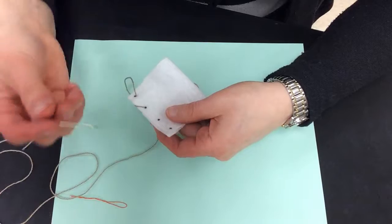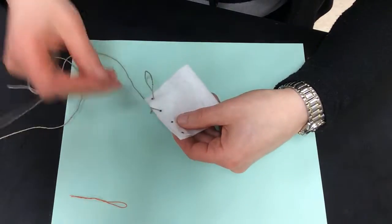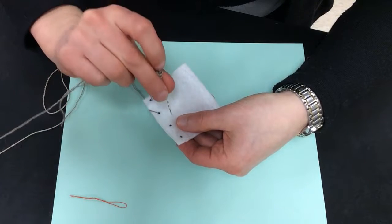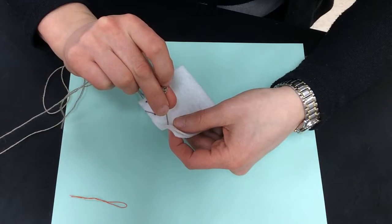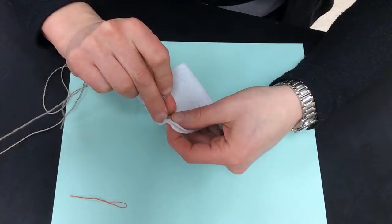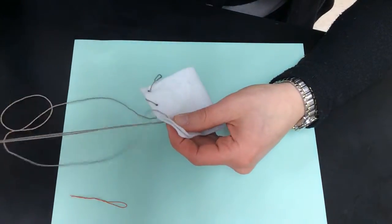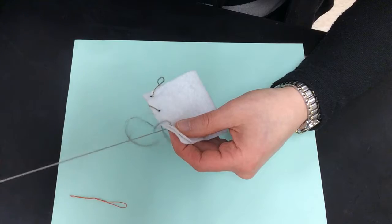So next, I move on to, I keep my thread on this side, the side that I've already sewn. And then I'm going to take my needle and go through. I'm going to go through that hole again, or not the hole, but through the dot, the next dot.